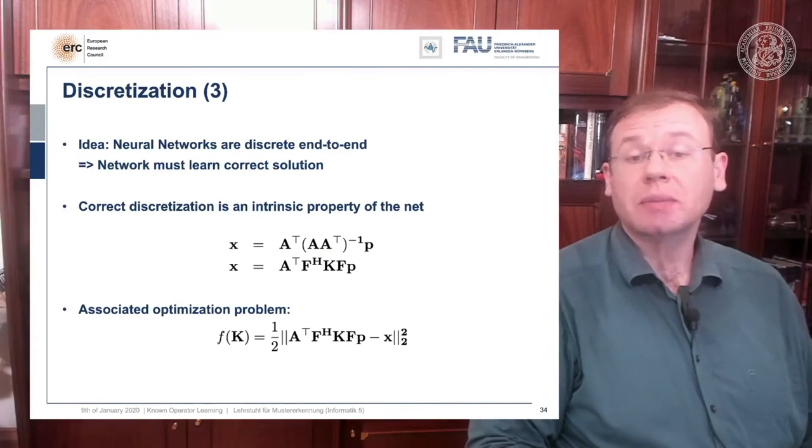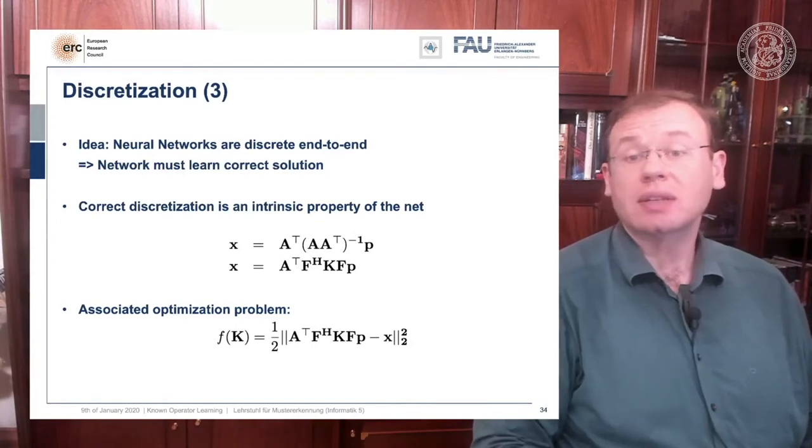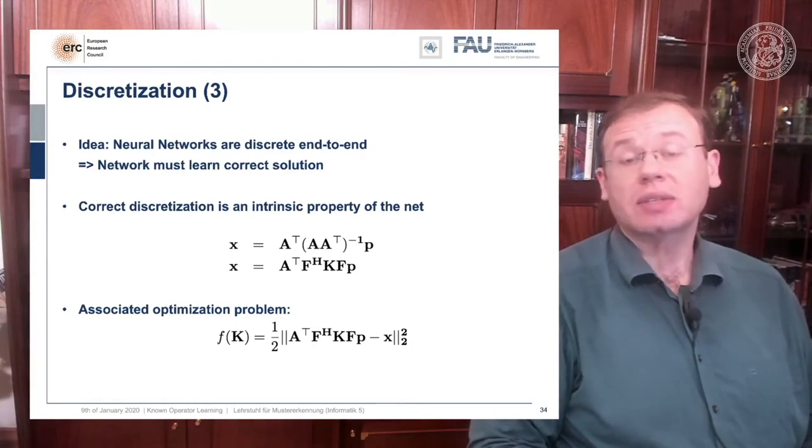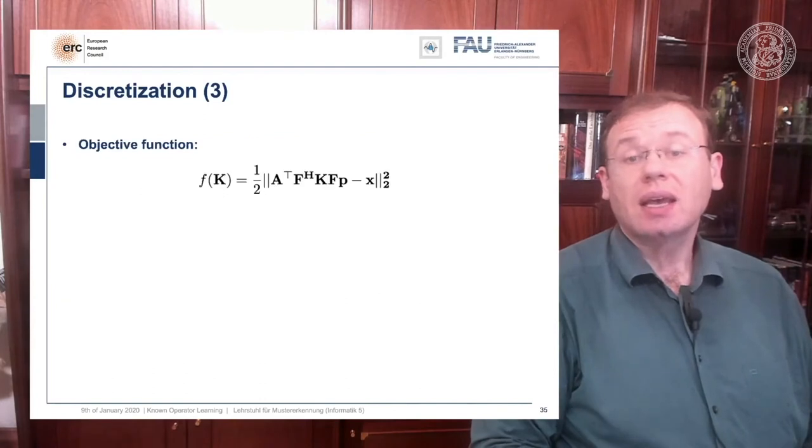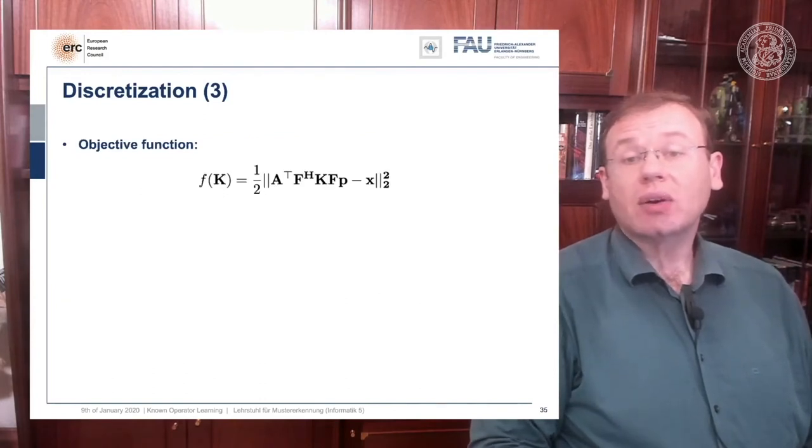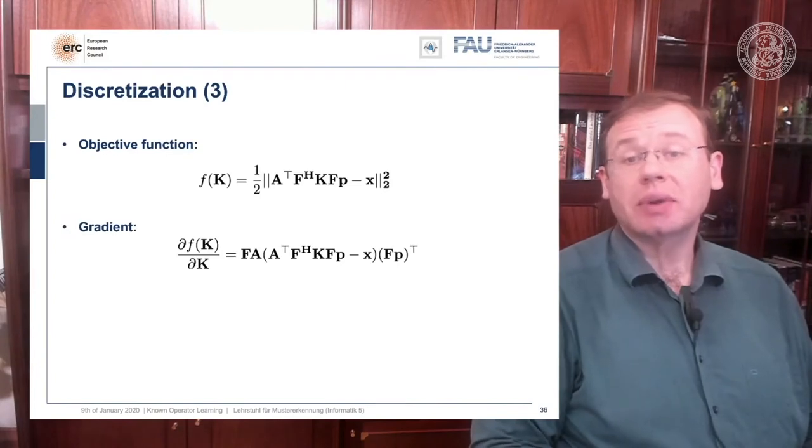We can actually optimize now for the correct filter weights. What we would do is we would solve the associated optimization problem, and that is simply that we want to have the right hand side equal to the left hand side and we choose an L2 loss. You've seen that at numerous occasions in this class.